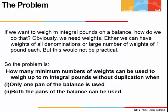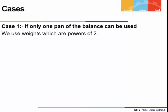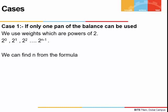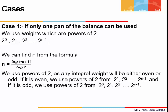Second, both the pans of the balance can be used. This gives rise to two cases. The first one is when we are using only one pan of the balance. In this case we can use powers of 2, which means we take weights of denomination 2 to the power 0, 2 to the power 1, and go up to 2 to the power n minus 1. All these weights can be used to weigh any integral pound when using only one pan. To find n, we use the formula: n equals log of (m plus 1) divided by log 2, where log is to base 2.